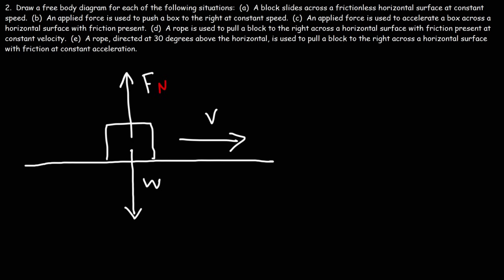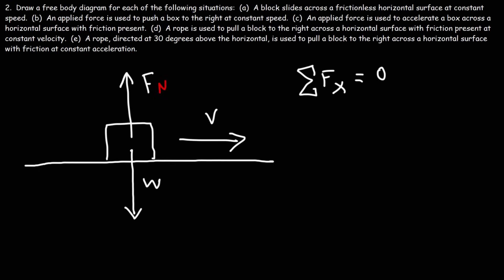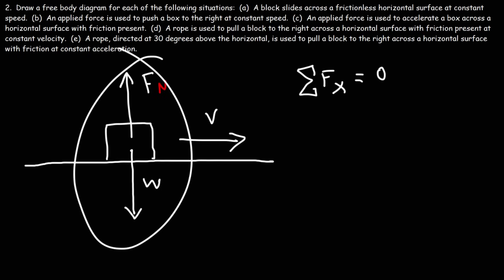Are there any forces in the x direction? If the object is moving at constant velocity, the net force in the x direction will be zero. There's no friction slowing this down, so there's no applied force accelerating it to the right either. There are no forces in the x direction here.